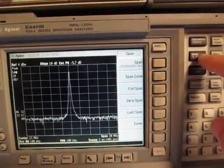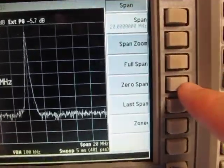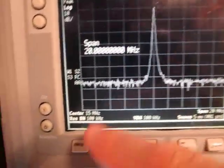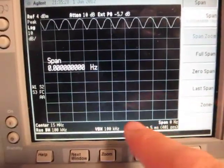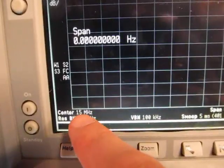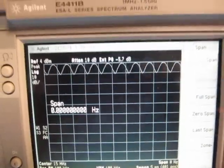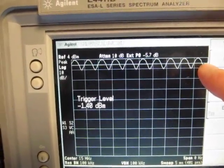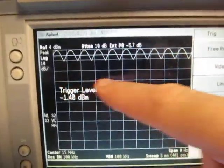Now, if I just hit my span key and I change from 20 megahertz span down to zero span, now I'm going to take that resolution bandwidth filter, which right now is set to 100 kilohertz wide. I'm going to just park that at the center frequency of 15 megahertz. And there's my resulting display. I'll do a quick little video trigger here so I can trigger on that signal and make it sit still. So now I can actually see the amplitude variation over time.